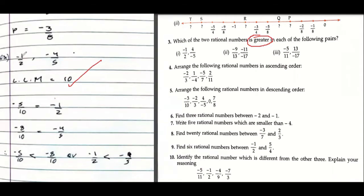LCM is 10, so -1/2 can be written as -5/10. You're multiplying it by 5, so -5/10. And -4/5 is getting multiplied by 2 to become -8/10.